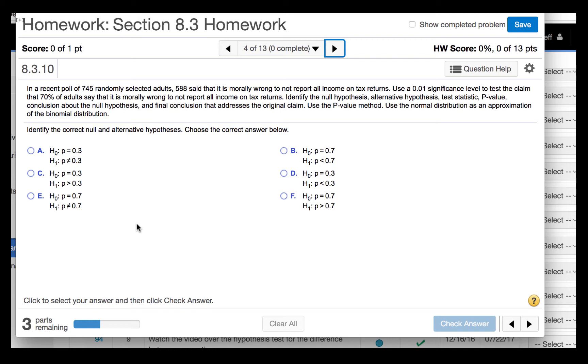Remember that the null hypothesis always contains the equal sign. So our alternative hypothesis would be not equal to. We have a two-tail test.